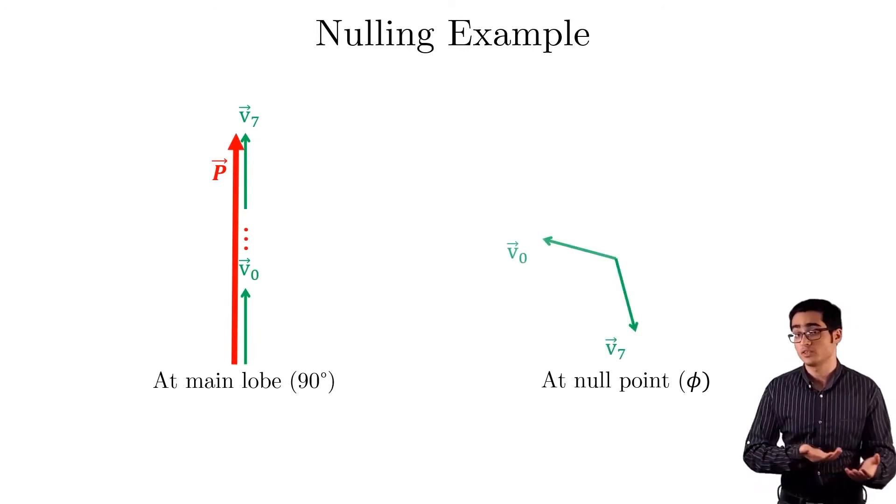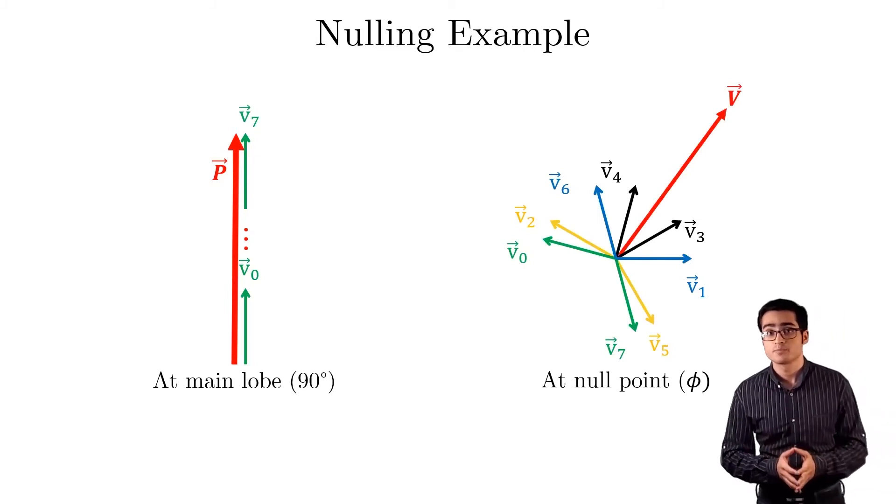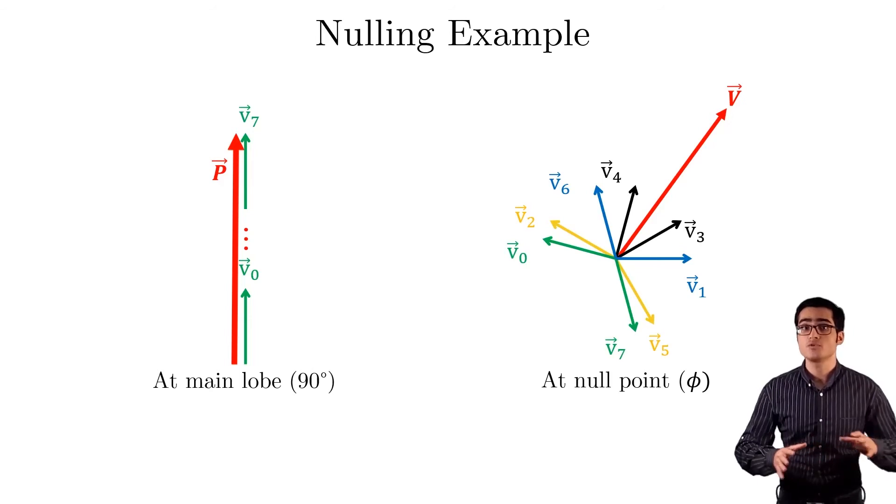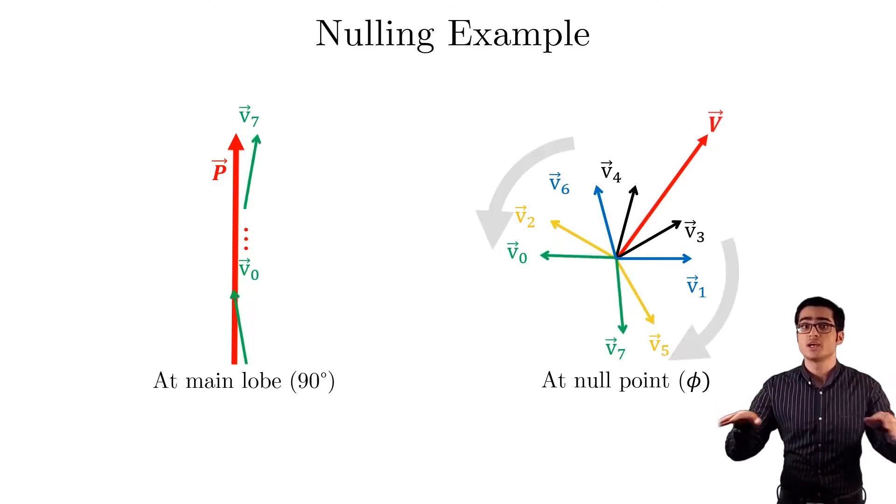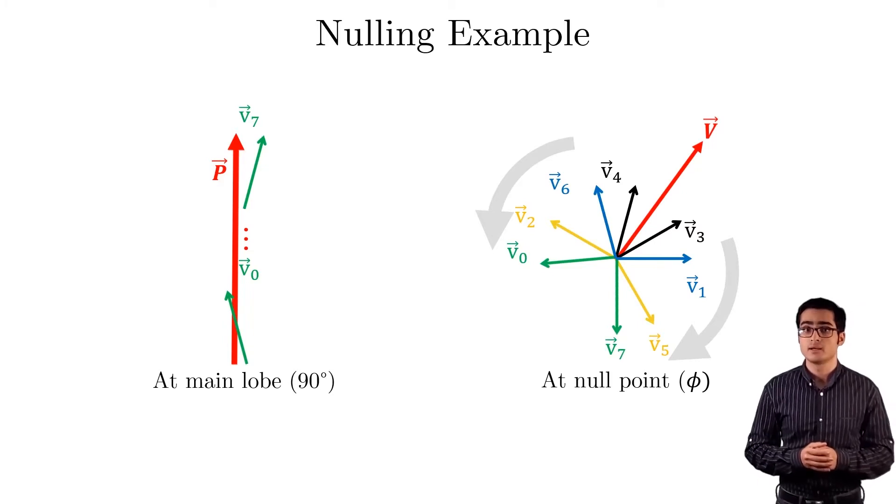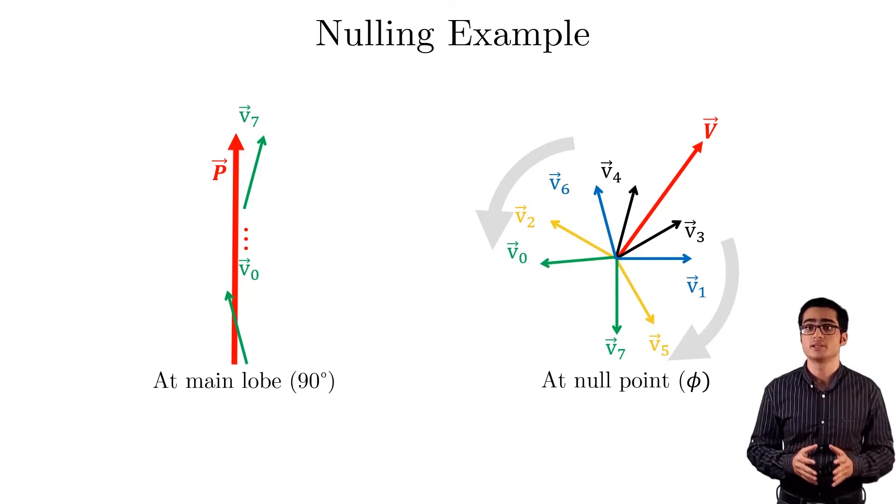Now let's say that the main lobe is at 90 degrees, at which the vectors are all aligned, and we want to create a null at phi, at which the vectors look like this. Nullify's algorithm goes like this. Start with a symmetric pair, say the green one, and rotate both its vectors towards the opposite direction of v. We can do that by introducing a phase shift at the antennas corresponding to this rotation.